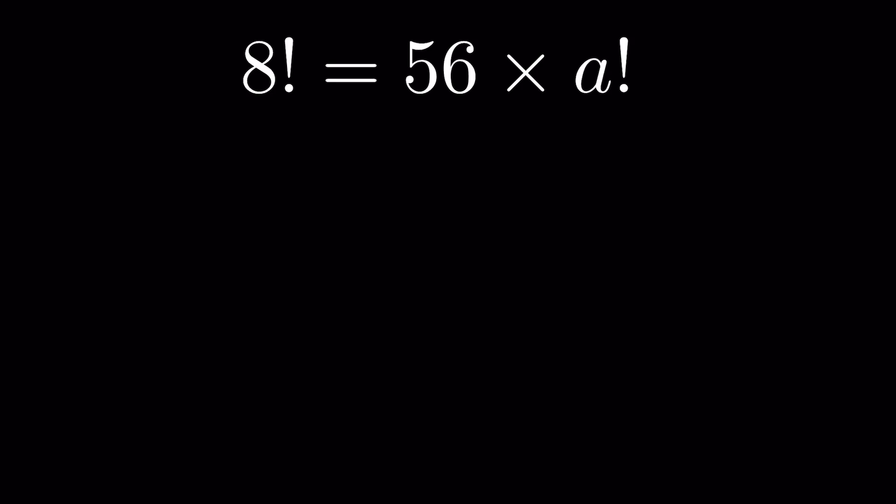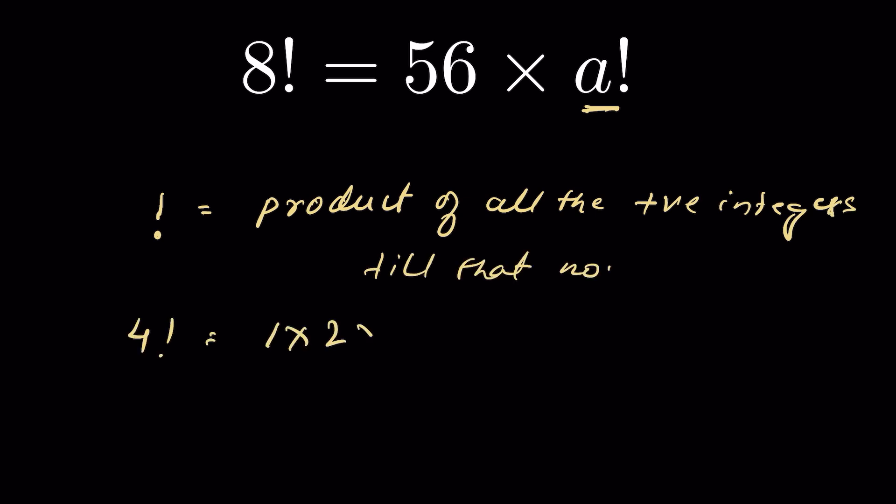8 factorial equals 56 times a factorial. We have to find the value for a. A factorial means product of all the positive integers till that number. That means 4 factorial is equal to 1 times 2 times 3 times 4.